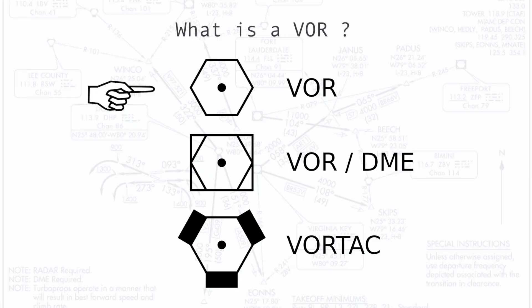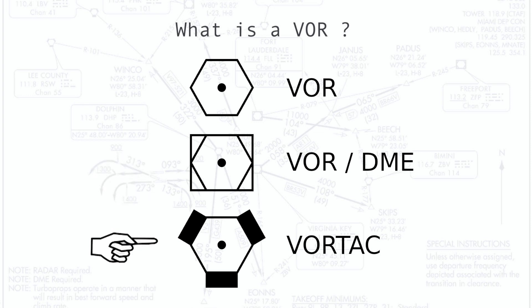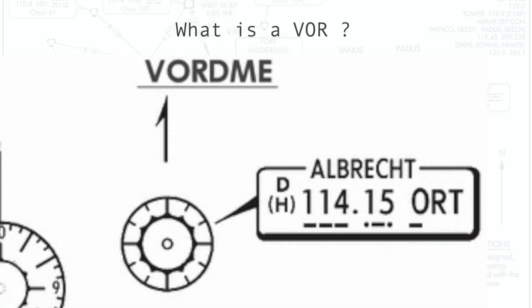Here are some symbols you may come across on aeronautical charts. The first one is a VOR standalone, the second is a VOR DME, and the third is a VORTAC — VOR and TACAN together. Here is also a symbol on Jeppesen charts — this is Albrecht, a VOR DME.